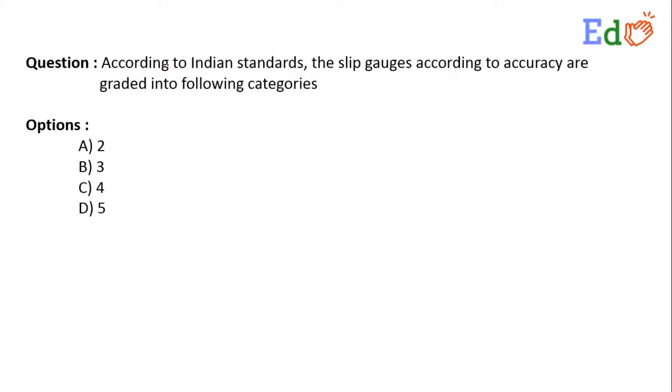Let us consider this interesting question: According to Indian standards, slip gauges according to accuracy are graded into following categories. The options are given: A) 2, B) 3, C) 4, and D) 5. Here, option 3 is the correct answer because...